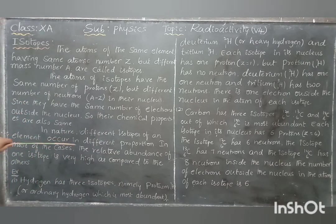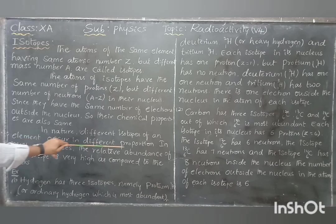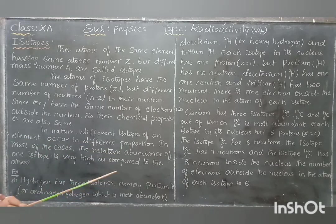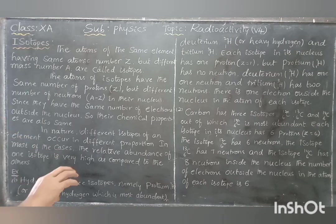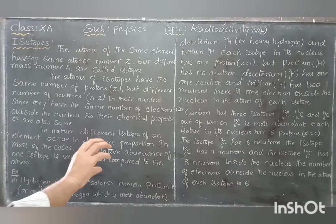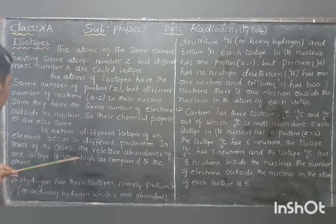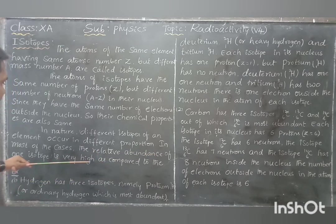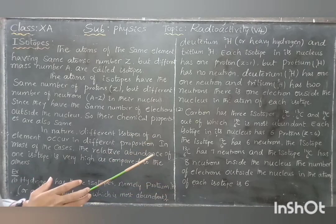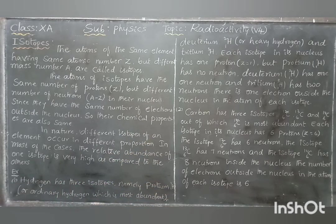In nature, different isotopes of an element occur in different proportions. Out of these, one is the most abundant. In most cases, the relative abundance of one isotope is very high as compared to the others — one is the most abundant.